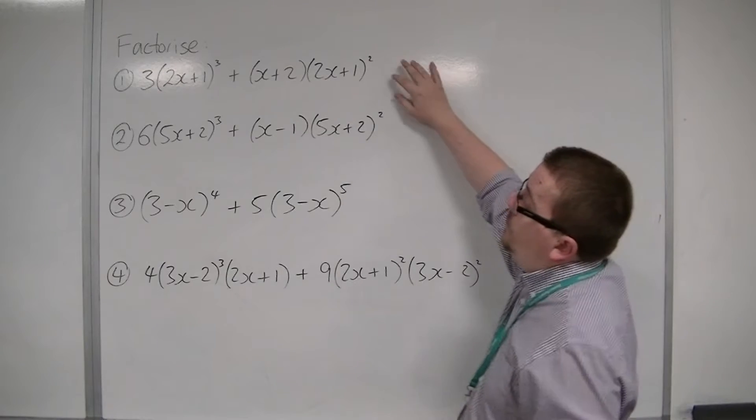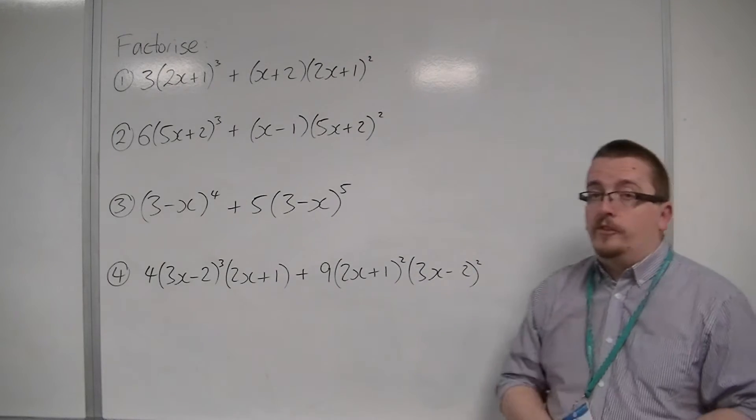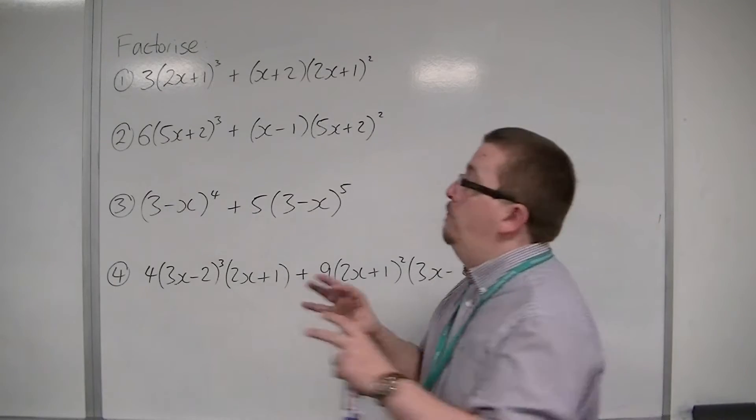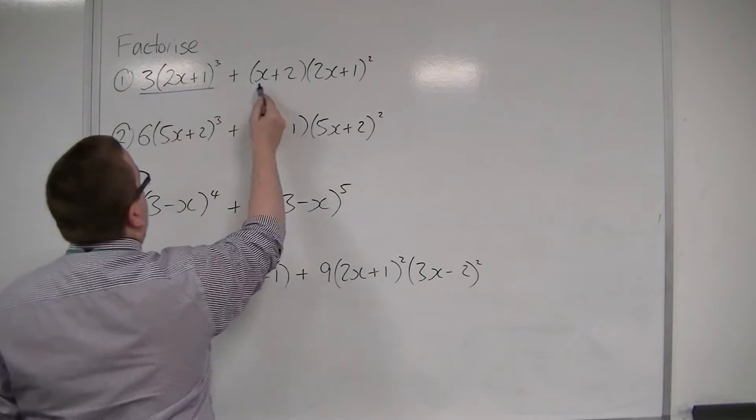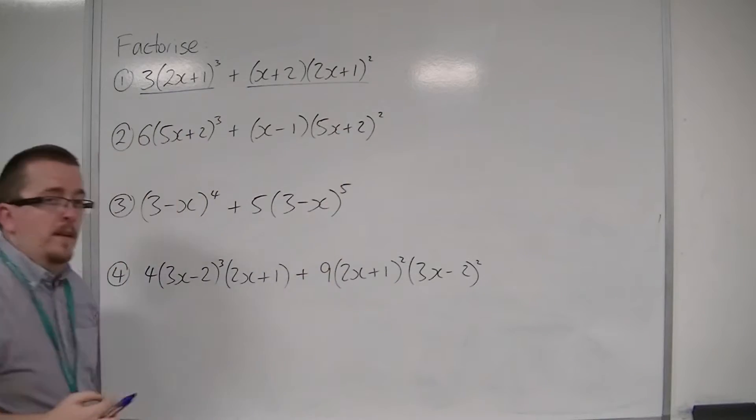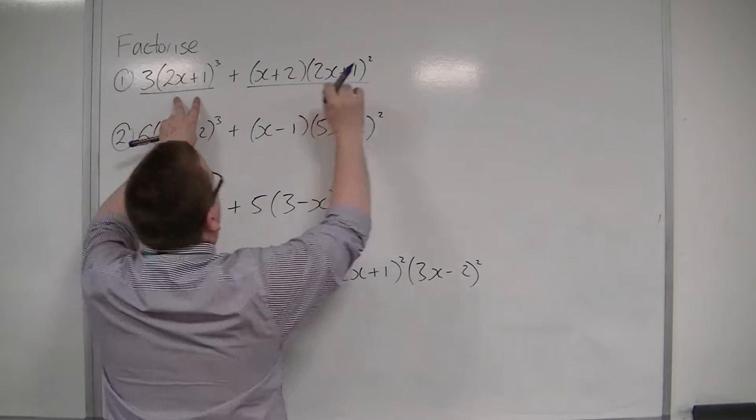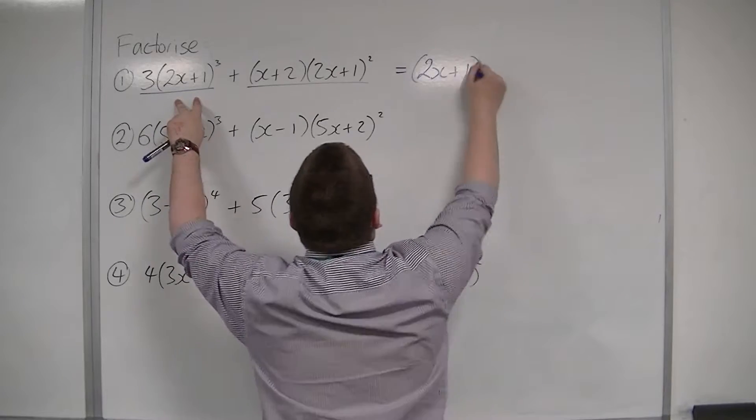Let's look at this first one, 3 lots of 2x plus 1 all cubed plus x plus 2 lots of 2x plus 1 squared. So, what you're looking for is a common factor to both terms. Both terms meaning this term here and this term here. You should be able to see that both of them have a 2x plus 1.